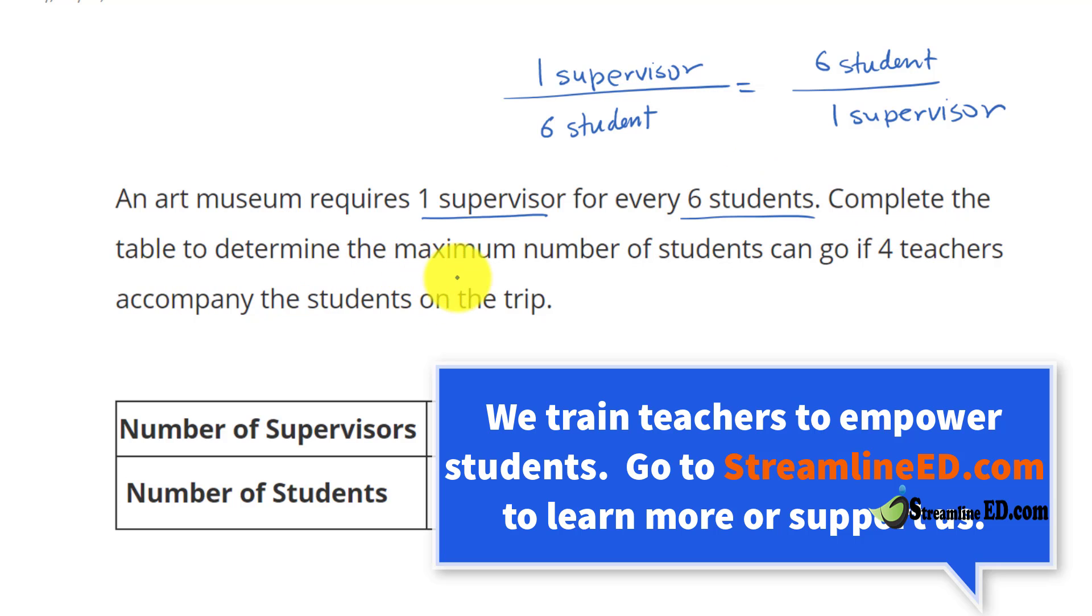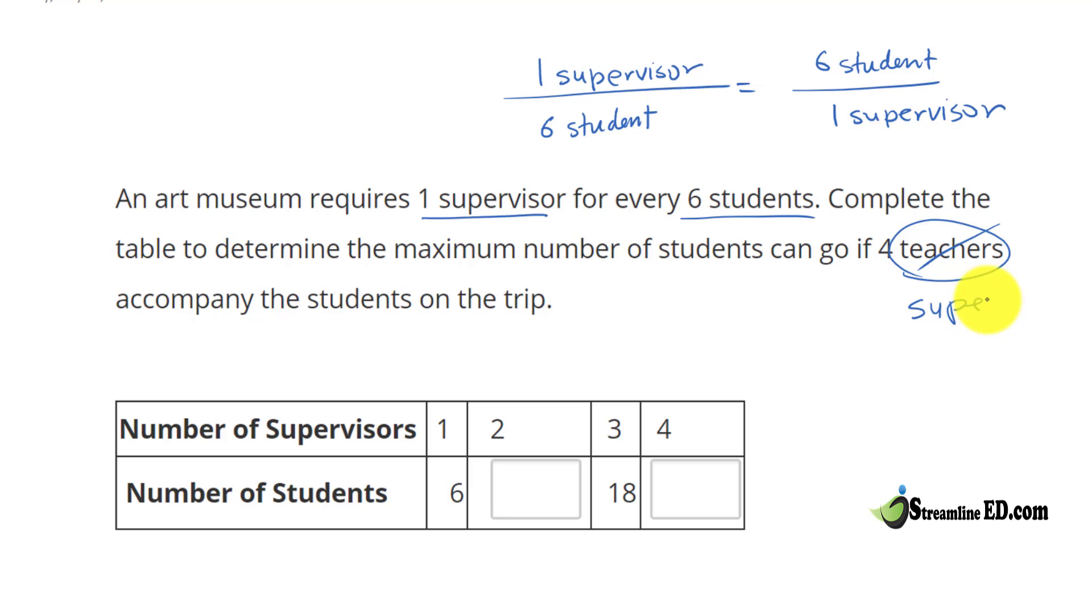Complete the table to determine the maximum number of students can go if four teachers accompany the students on this trip. Here's a little tricky part. They use the term teacher, but the teacher is a supervisor. So be careful with that.